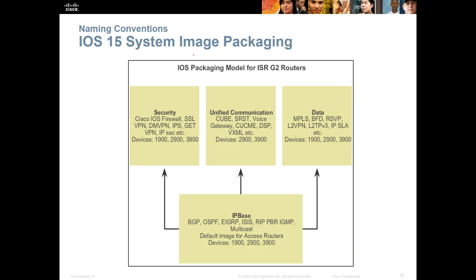Here's the IOS 15 system imaging packaging: IP base, and then it branches into three other packages — security, unified communications, and data — depending on what you need. This applies to the 1900, 2900, and 3900 series devices. If you want firewall features, you get the security package. If you want voice or voice gateway, you get that. If you want data, you get the data license.